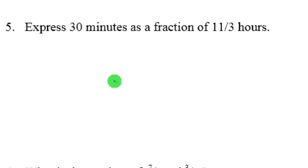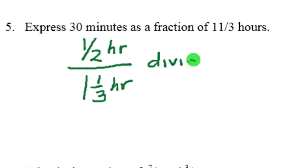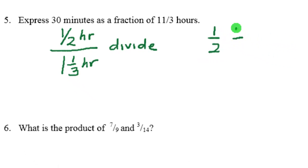30 minutes, you know that's half an hour. So this is 1/2 hour. And when they want to express it as a fraction of 1 and 1/3 hours, that is actually a division problem. You want to take the 1/2 hours and put it over 1 and 1/3 hours. But that's a division. Divide.